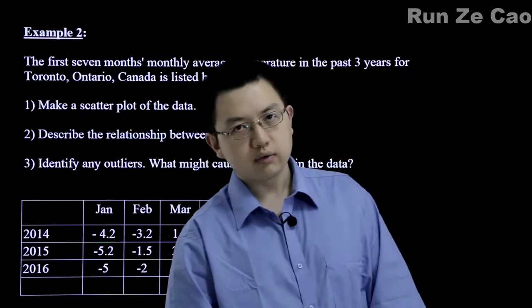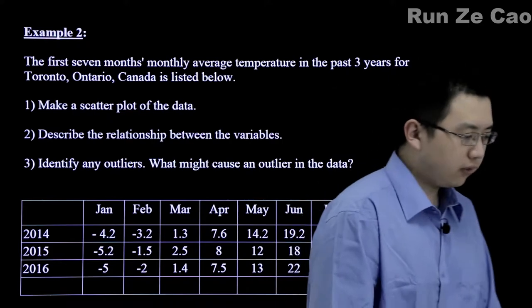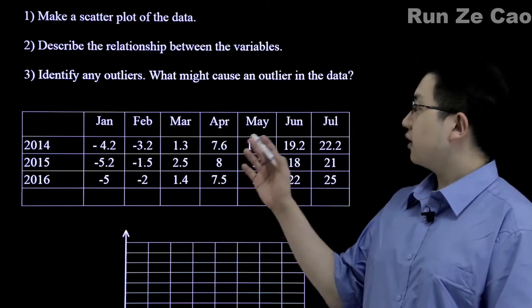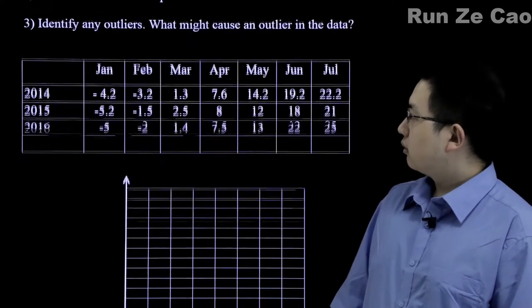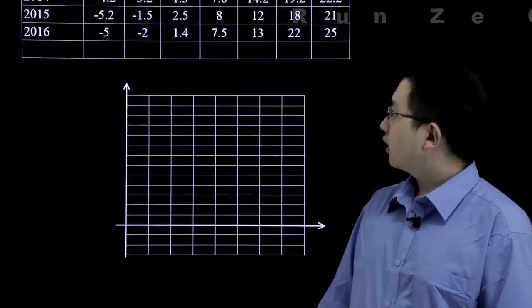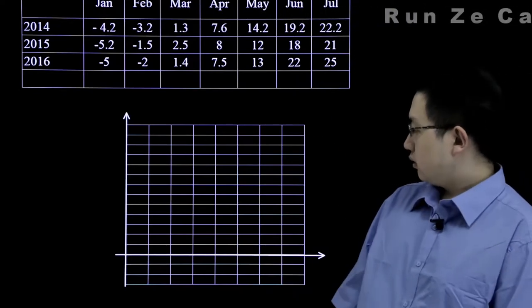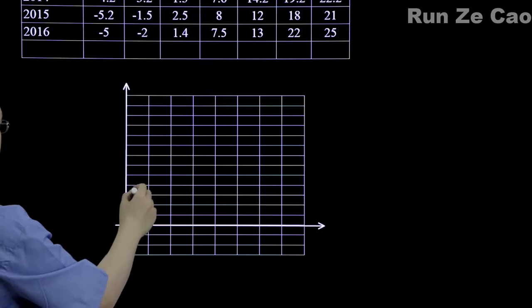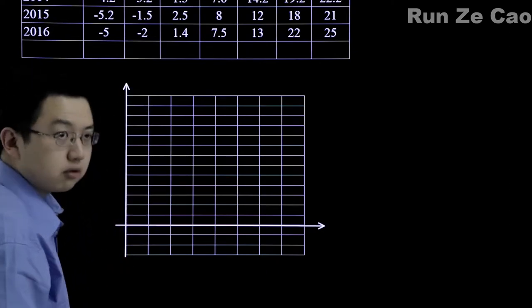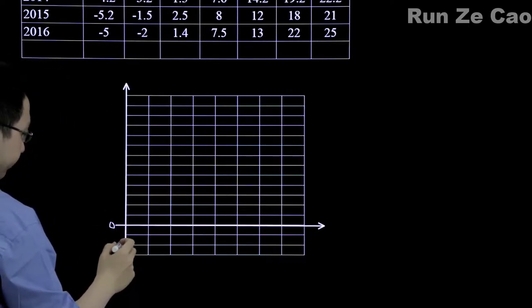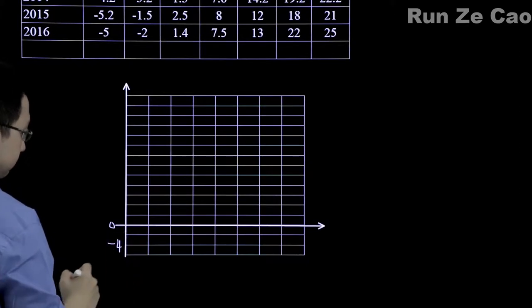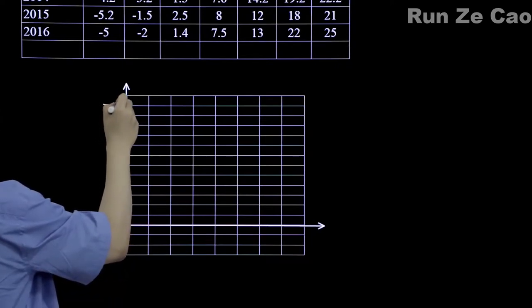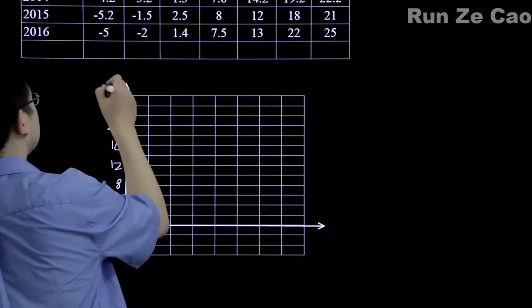Next example: we have the first seven months' monthly average temperature over the past three years for Toronto, Ontario, Canada. We're supposed to make a scatter plot of this data, describe the relationship between the variables, and identify any outliers. The temperature axis runs from about negative four to positive twenty-four degrees Celsius, and the time axis covers January through July.